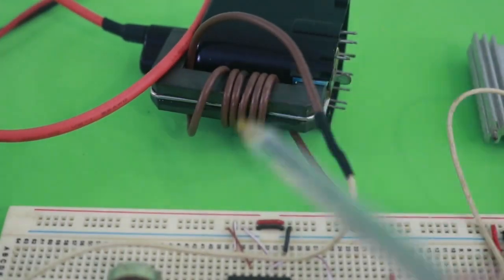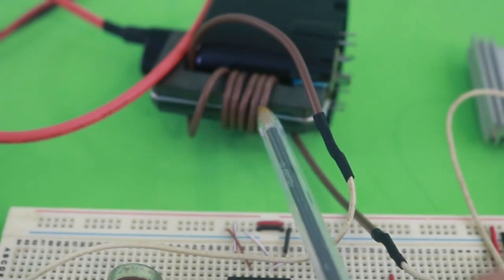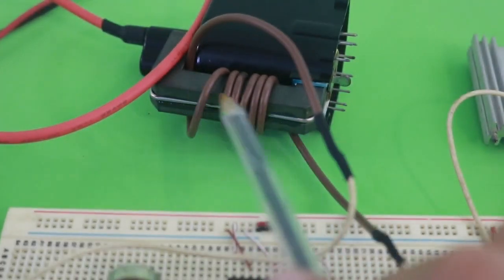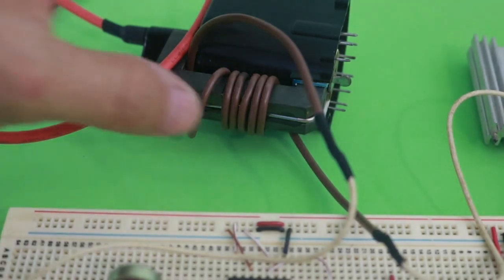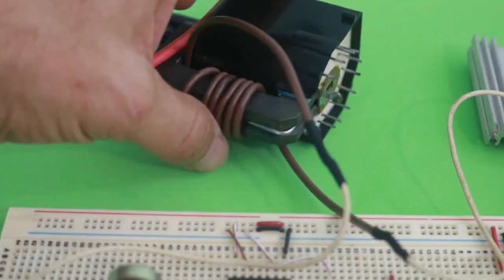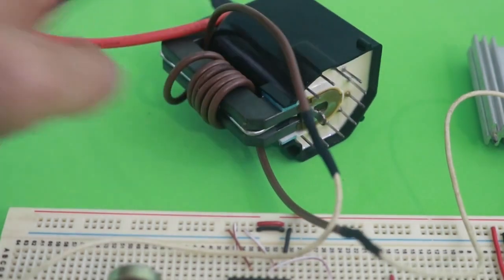The primary is wound on the core of the flyback. You can use between 6 to 9 turns of wire. The flybacks do have an internal primary. However,